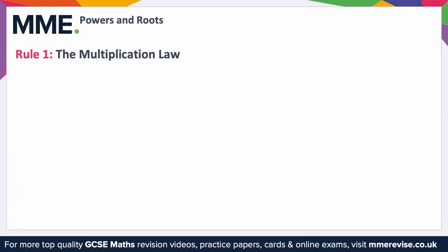The multiplication law states that when you multiply similar terms you add the powers. For example, if we had a to the power of b times a to the power of c, these two base numbers must be the same — that is a necessity — while b and c can be different. This equals a to the power of b plus c.